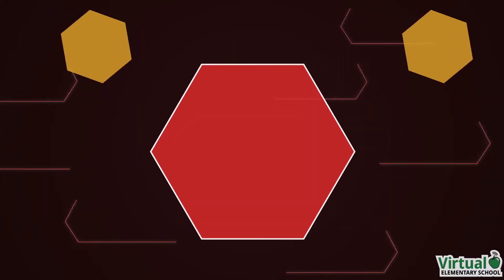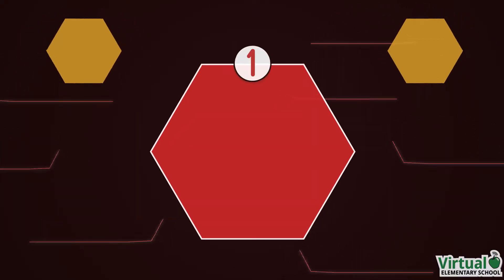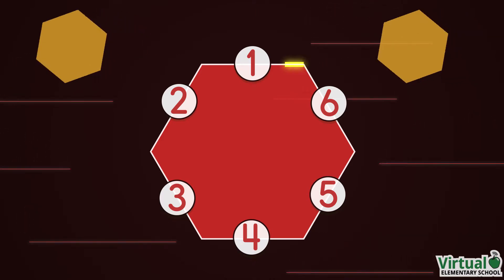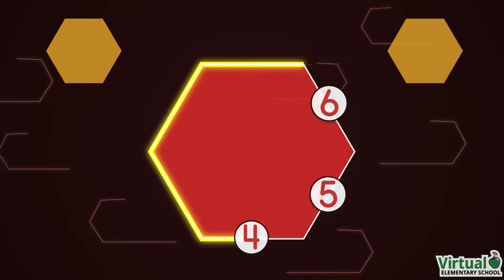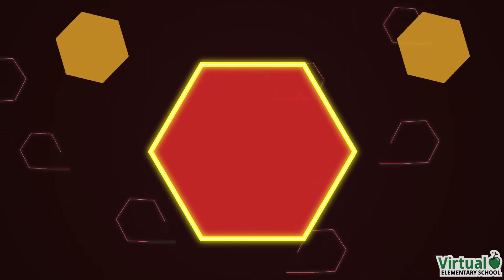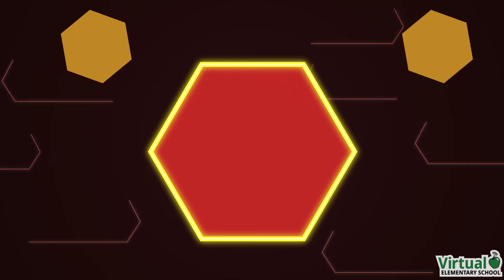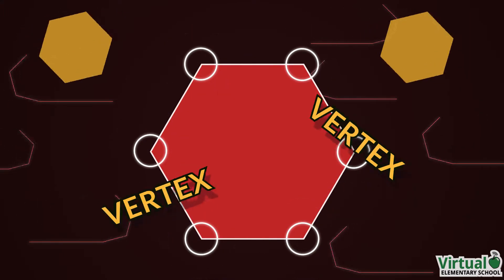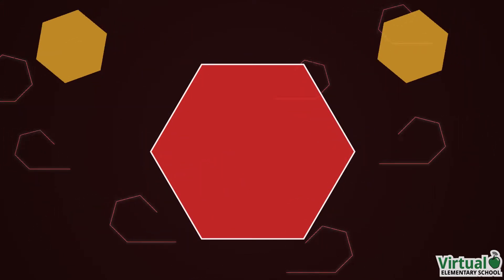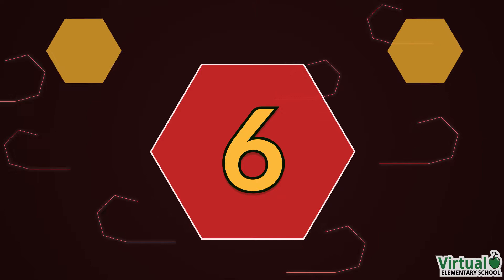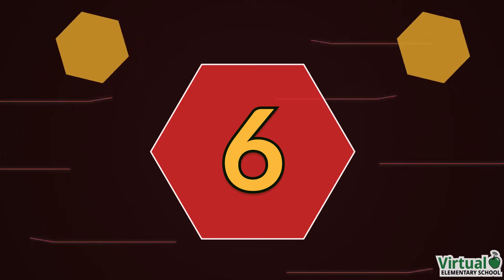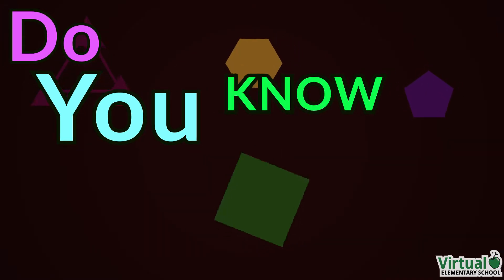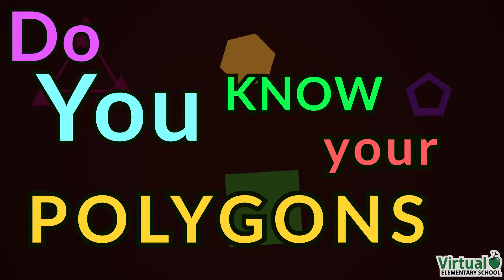A hexagon is a shape with six sides. It's a polygon made of straight connecting lines. Where the lines meet is called a vertex. A hexagon has six vertices. Which polygon's next? Do you know your polygons?